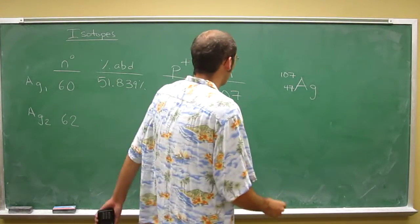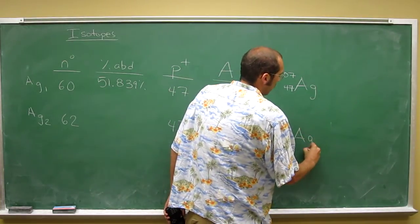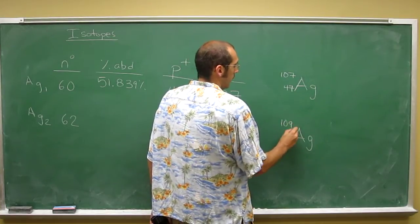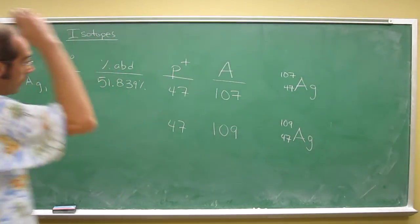And then the atomic symbol for the second isotope is going to be 109 at the top there, and 47 at the bottom.